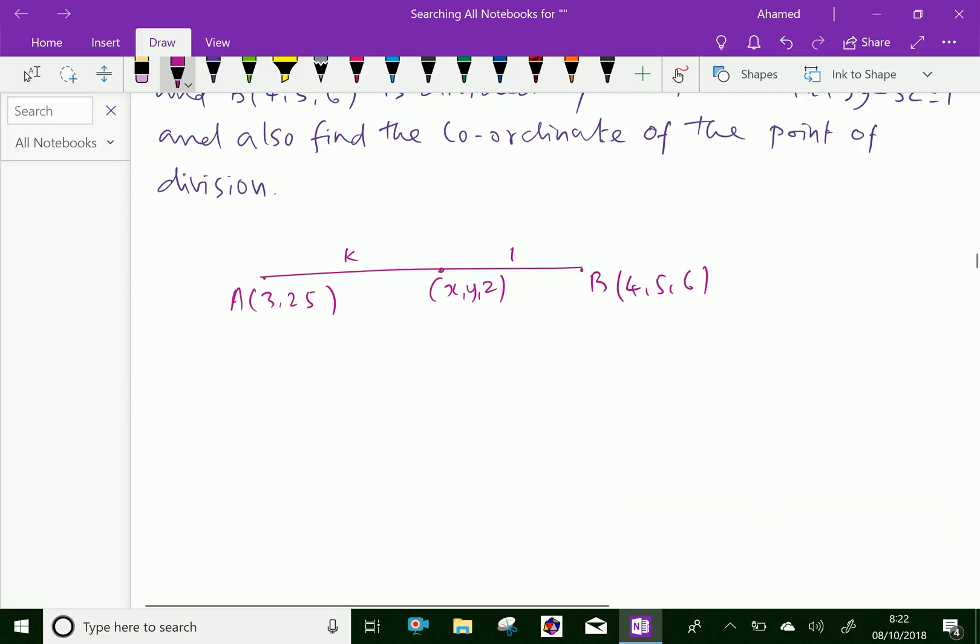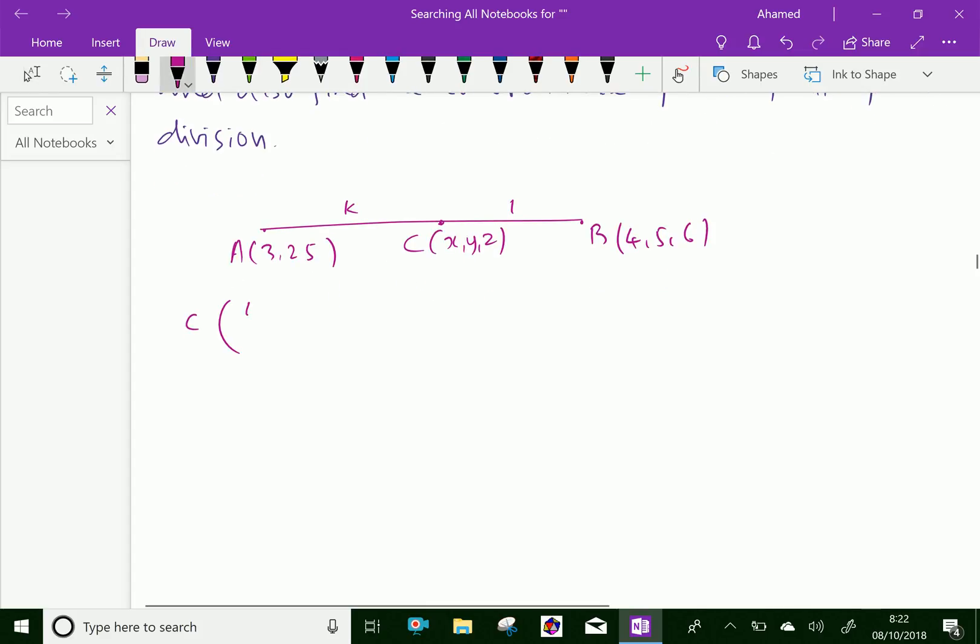Now, let us find the point C here. C in terms of k we can find that is (4k+3)/(k+1), then (5k+2)/(k+1), and (6k+5)/(k+1).